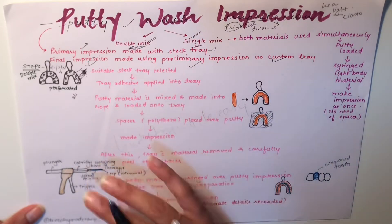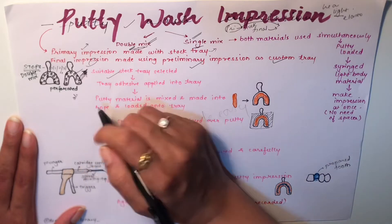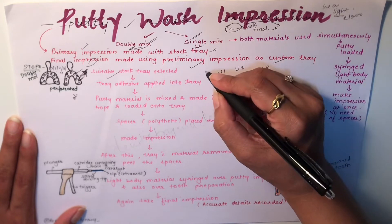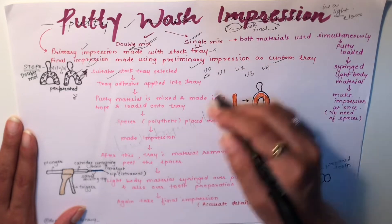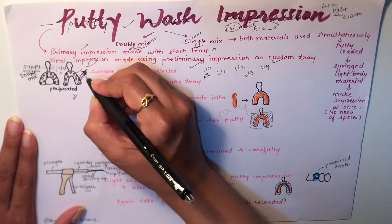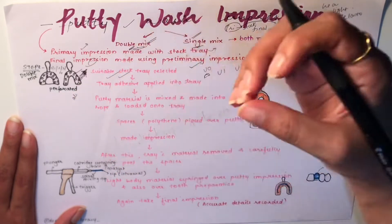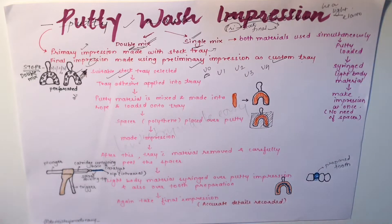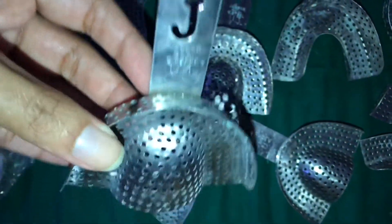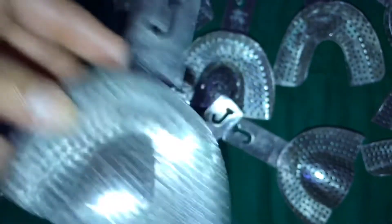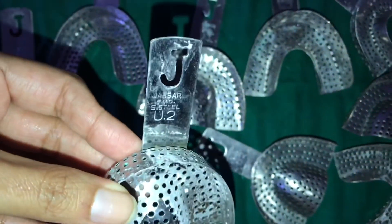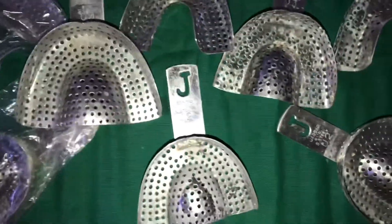Starting with the double mix technique: first, select the suitable stock tray depending on the jaw size — whether it is U0, U1, U2, U3, or U4. The stock trays used are perforated metal ones; the perforations allow material to seep out, which helps lock the material. They are available in various sizes — for example, U4 is upper jaw tray number four, L1 is lower jaw tray number one, with sizes ranging from 0 to 4.